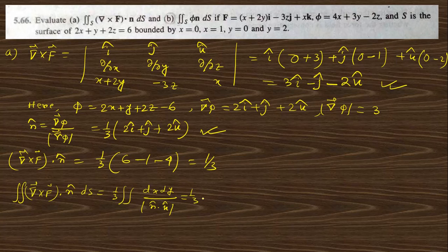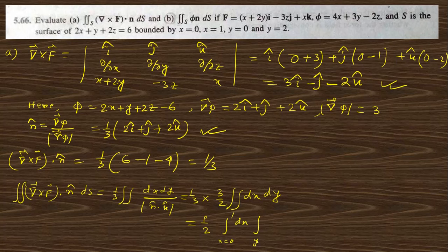So curl F · n̂ dS = (1/2) dx dy. The x-limit is 0 to 1 and y-limit is 0 to 2. Since these are independent, integrating separately: x gives 1 and y gives 2, so (1/2) × 1 × 2 = 1. The answer to part (a) is 1.